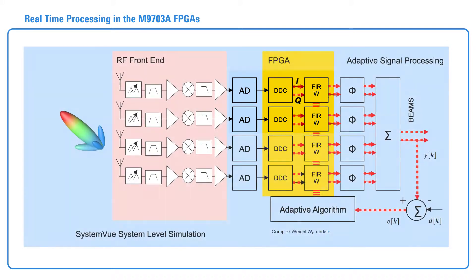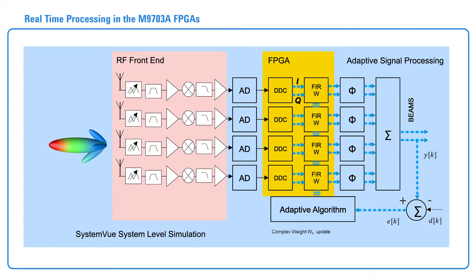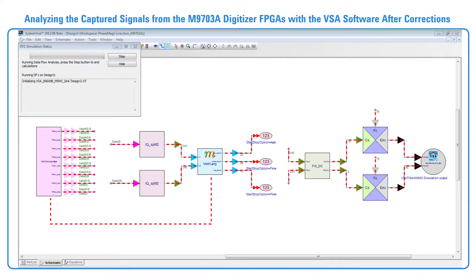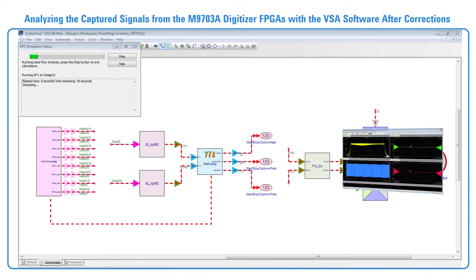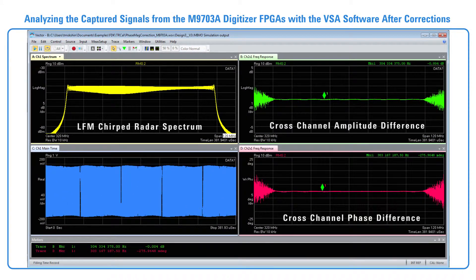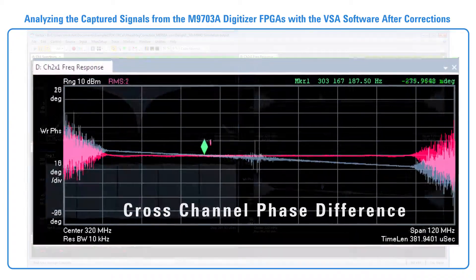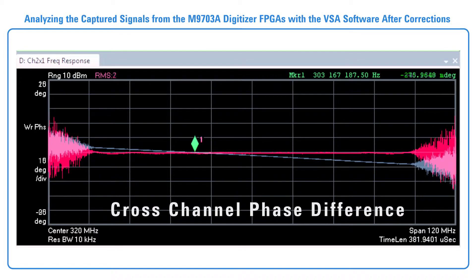Note that a similar process could be used for digital receiver beamforming applications if an adaptive algorithm were implemented. The post-processed signals from the FPGAs are read into SystemVue to display the measurement result using the VSA software. The VSA display shows the new cross-channel measurement results. The amplitude and phase differences between the reference and measurement channels have been corrected across the LFM Chirp bandwidth frequencies. This shows significant improvement relative to the uncorrected amplitude and phase response shown previously, before the custom FPGA algorithm was implemented.